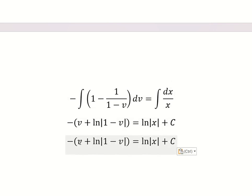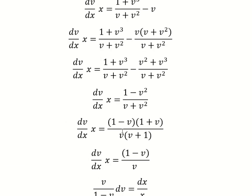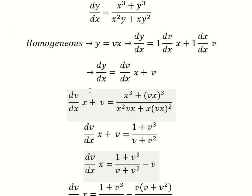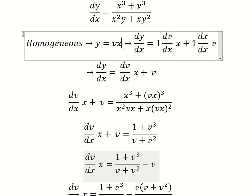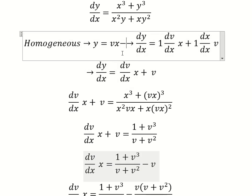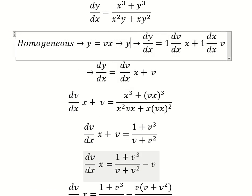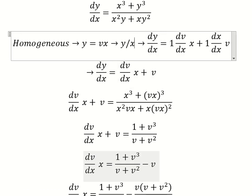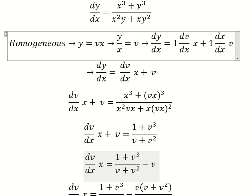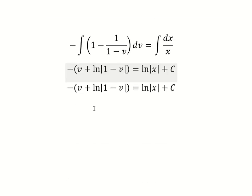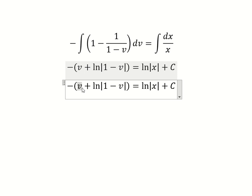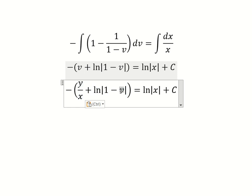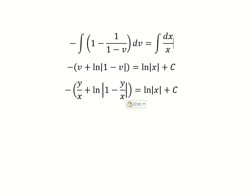About v — we divide both sides by x. Now we need to change v back into y over x.